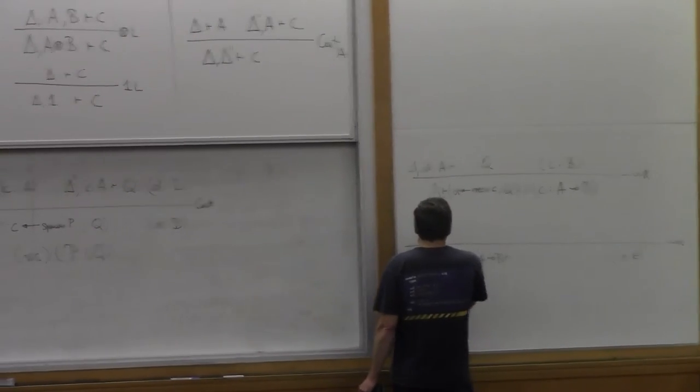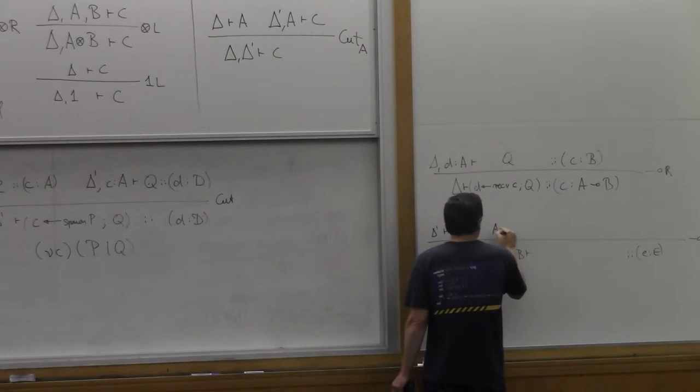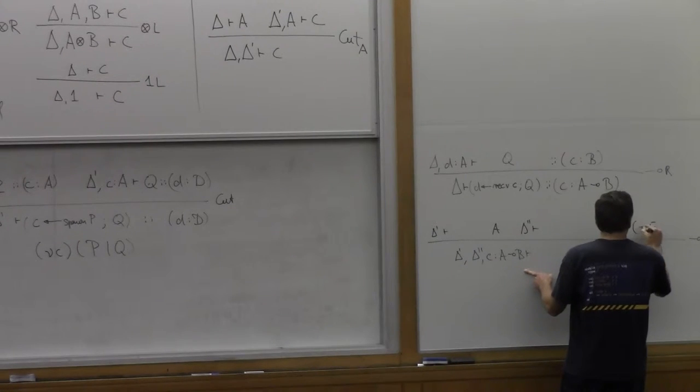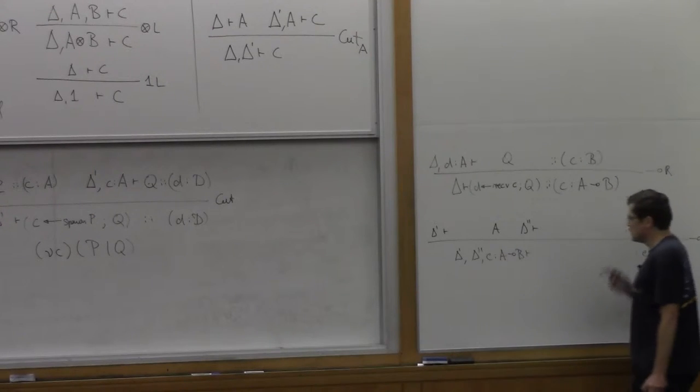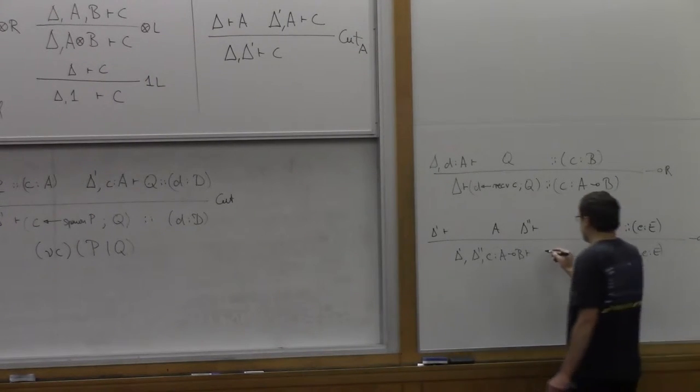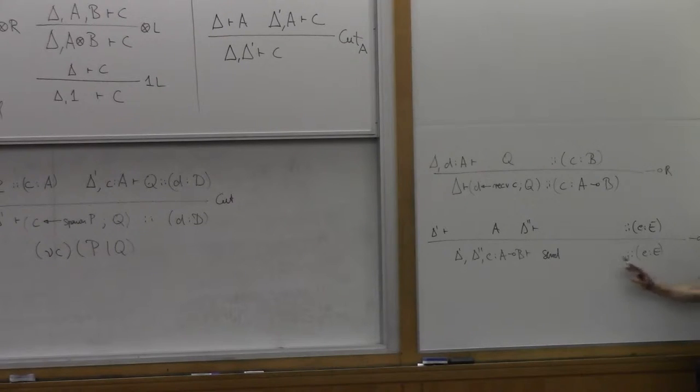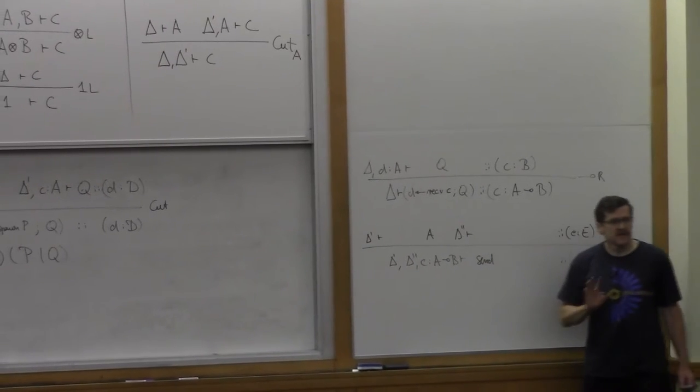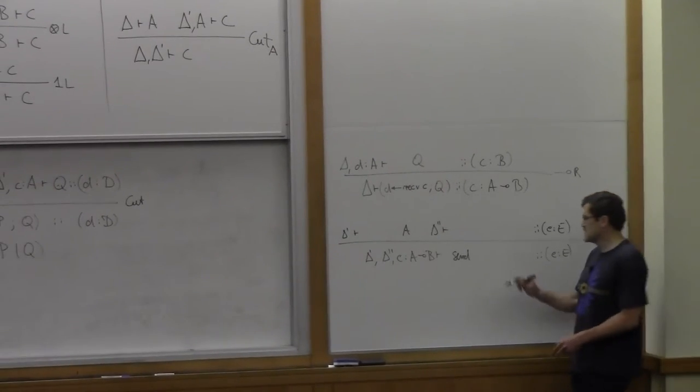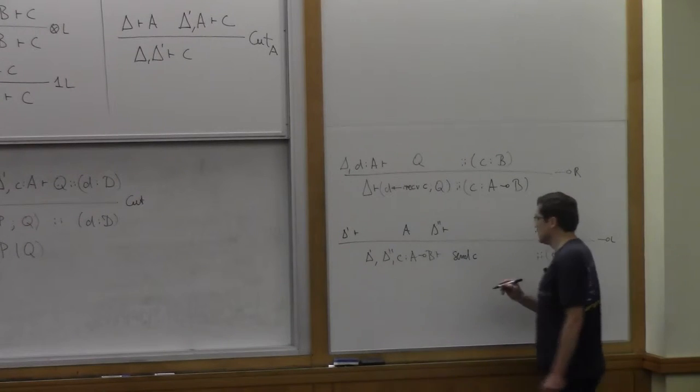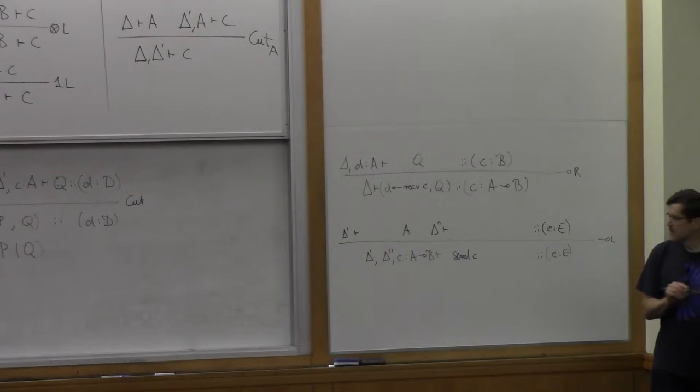When they're hooked up through the cut rule, at one end there's going to be process P which provides a service. At the other end of the channel there's going to be a process Q which uses it. And so they have to have exactly complementary action for computation to be able to proceed. So it's going to have to be a send. So we know that much. But let's figure out more about that. Delta prime, we prove A and delta double prime, we prove E. This is still along this channel.